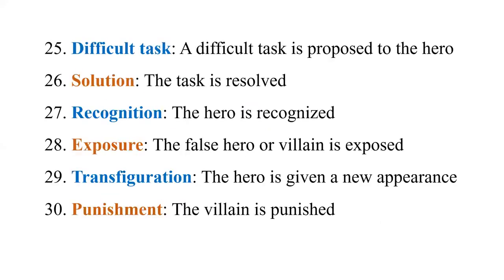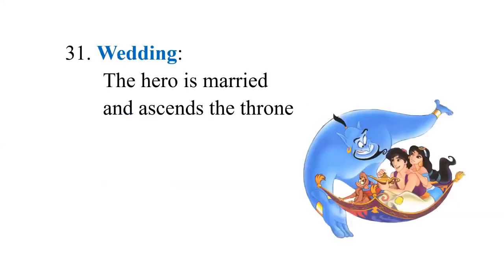Then the twenty-fifth: Difficult Task — the hero has to prove himself. Sometimes they are asked to break a bow, as in Ramayana, or cross seven seas. Some tough task is given. Finally, Solution — the task is resolved. Because of that, the hero is recognized. The false hero or villain is exposed — the Exposure. Now the hero is rewarded and given a new appearance — no longer a cook. The hero is given a home, wealth, and gets married. And Punishment — the villain is punished. And finally, a Wedding — the hero is married and ascends the throne. These are the 31 narratemes by Vladimir Propp — a structuralist analysis.